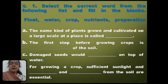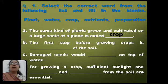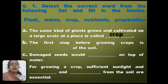What will be the answer among those words? The answer will be crop. The same kind of plants grown and cultivated on a large scale at a place is called crop.